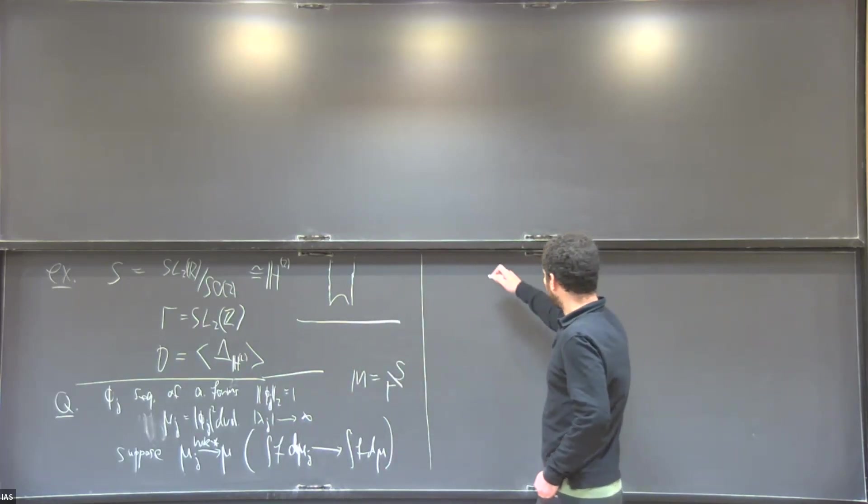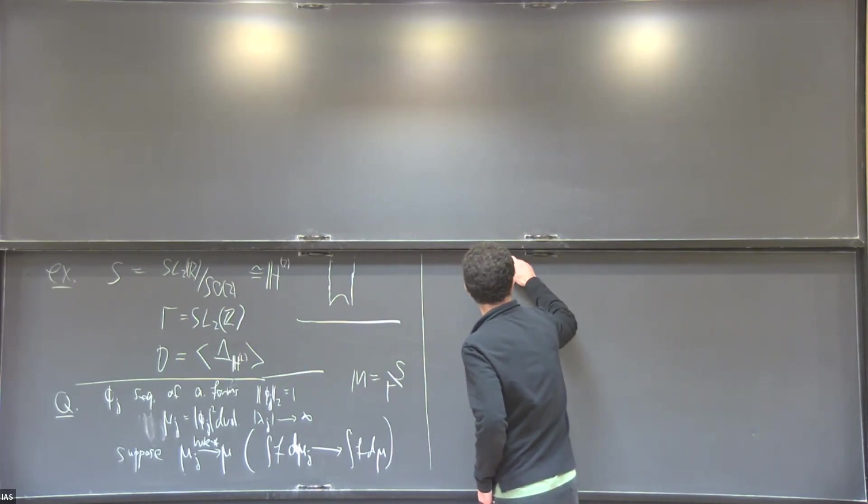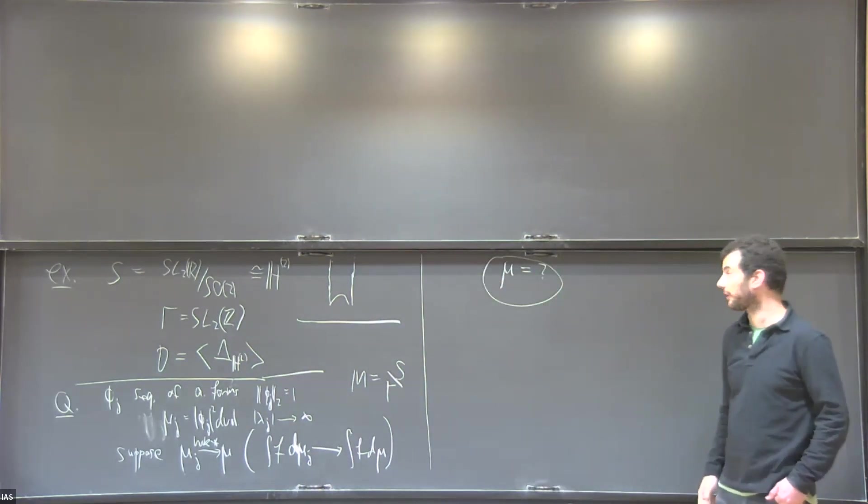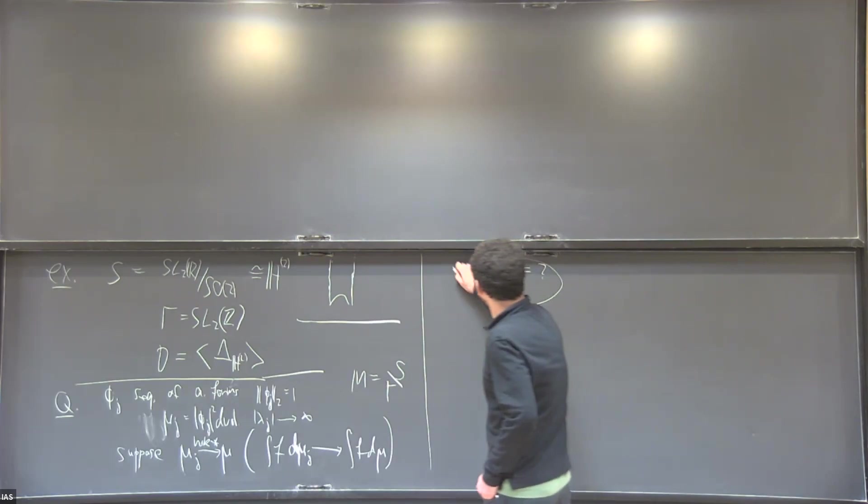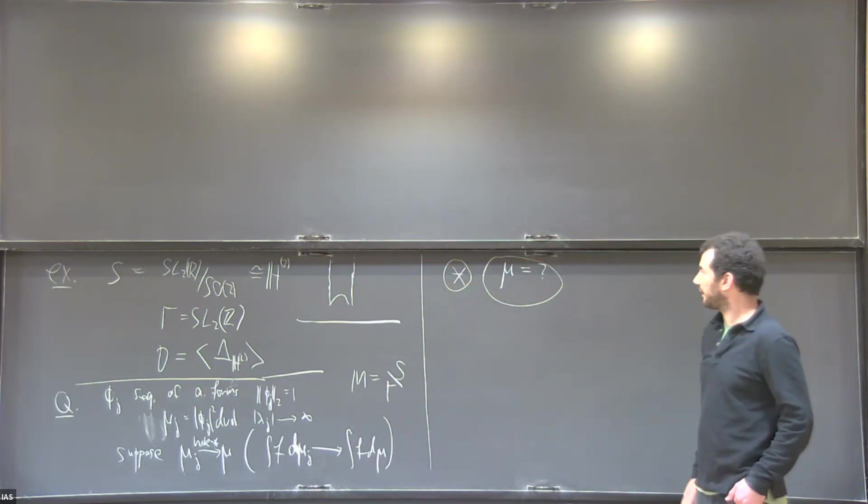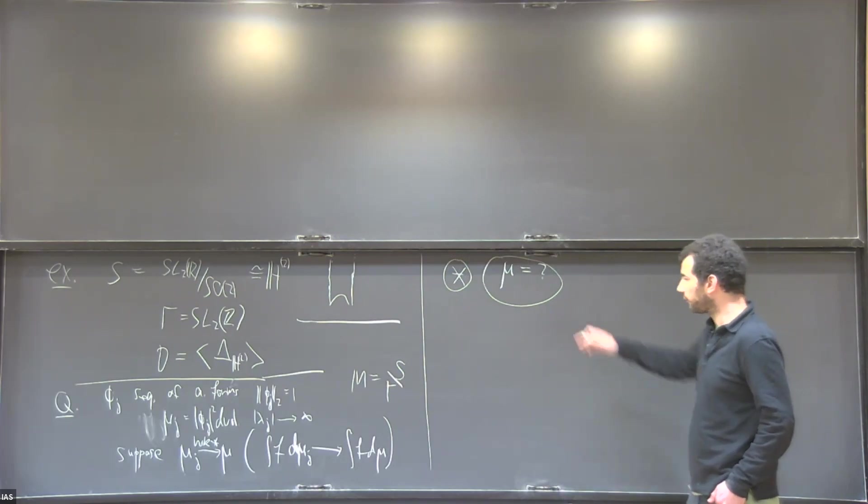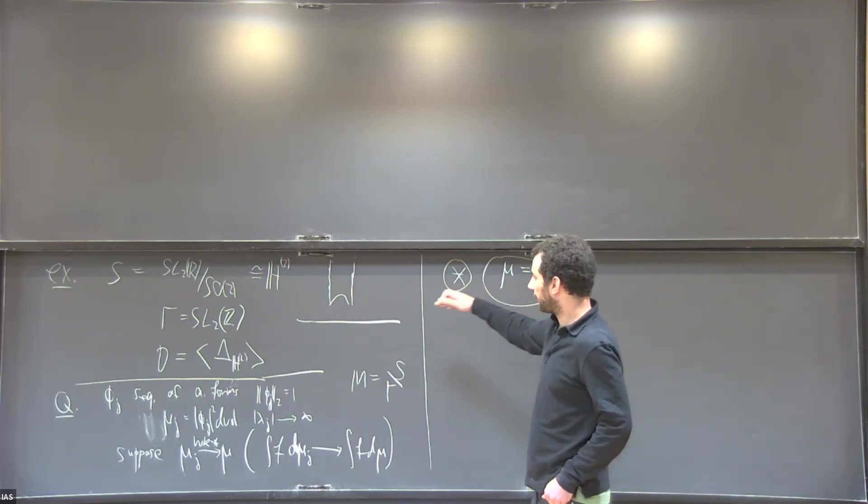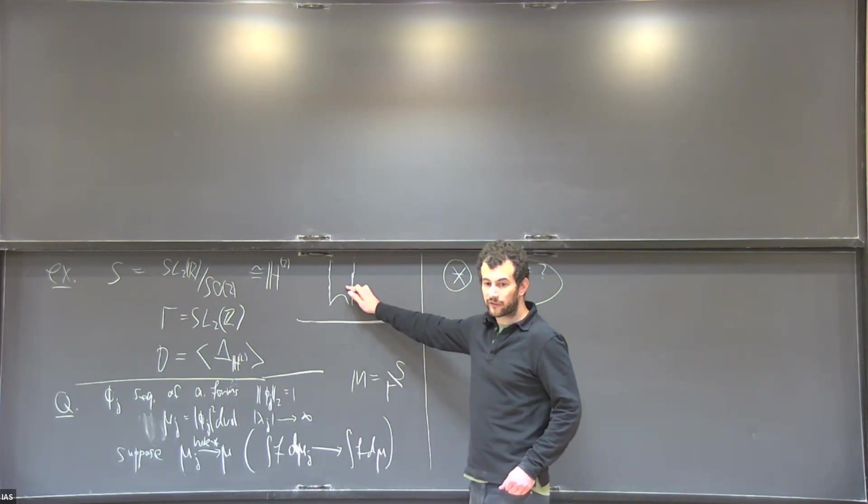So now the question is: what can this limit measure mu be? That's the basic question. Now it turns out that the answer to this question is very much related to the behavior of the geodesic flow on the unit tangent bundle.